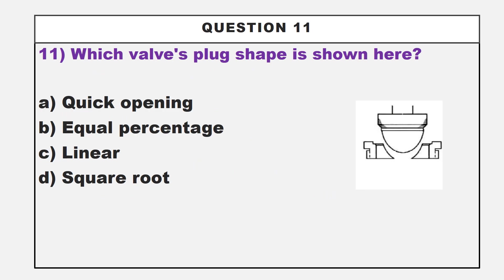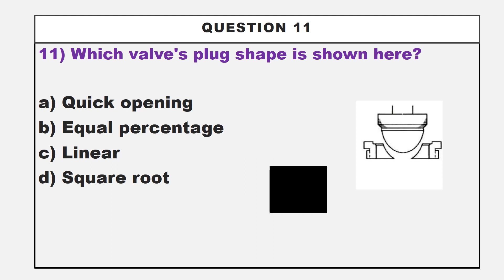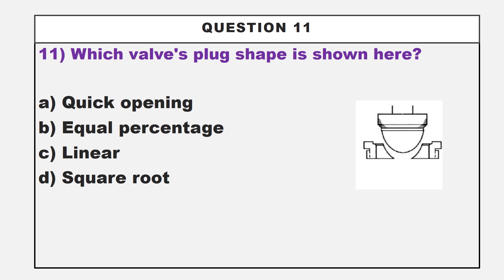In this question, there is a picture given here. The question is: which valve's plug shape is shown here? Option A: quick opening. Option B: equal percentage. Option C: linear. Option D: square root. The correct answer is option C, linear. The given picture shows the plug shape of a linear valve.